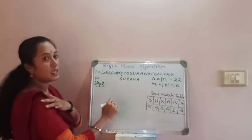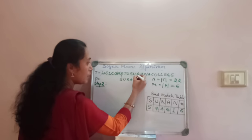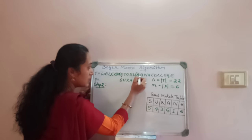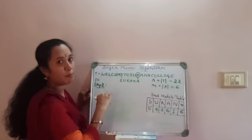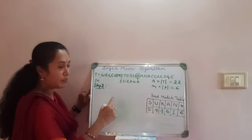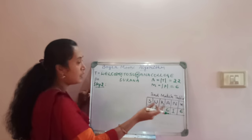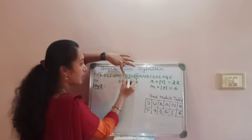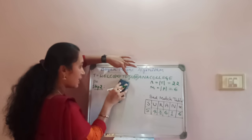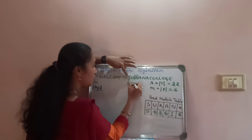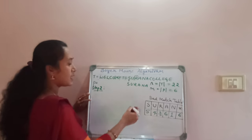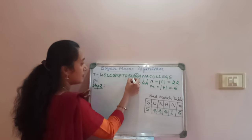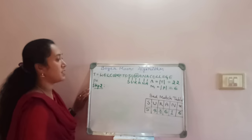In step 2, start matching from the right side. R and A — there is a mismatch. We take the R value from the bad match table, which is 3. So we move the pattern 3 positions to the right. Leaving the first character, start counting from the next character: 1, 2, 3 — we place the pattern at this new position. Now start matching: A matches with A, R matches with R, U matches with U, and S matches with S — the pattern is found in the given text.